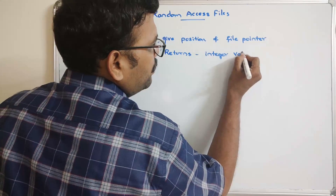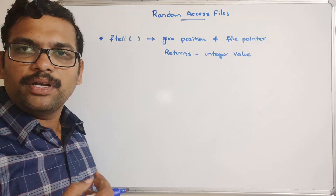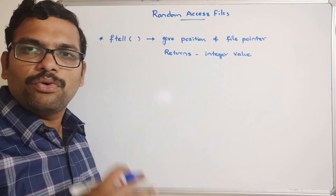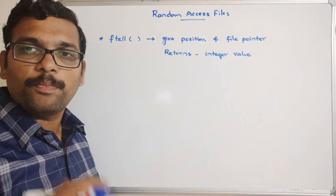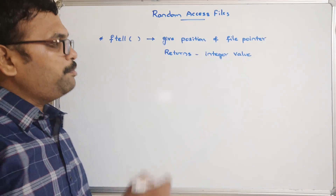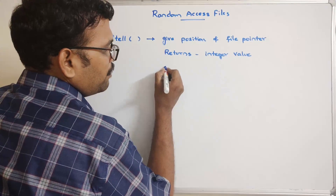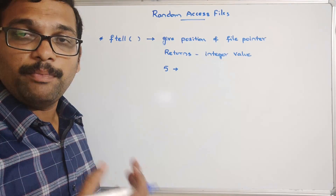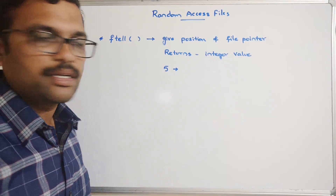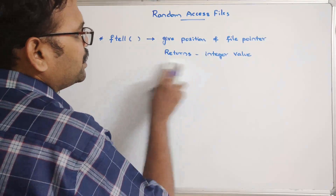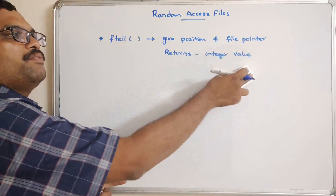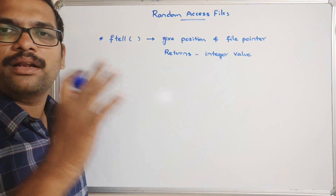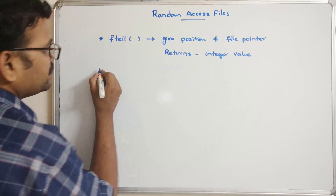The ftell function returns an integer value, which is the position of the file pointer. In files, data is stored in terms of characters, and each character occupies one byte. So if a file has five characters, that implies five bytes of data. The ftell function returns an integer representing the current position where the file pointer exists.